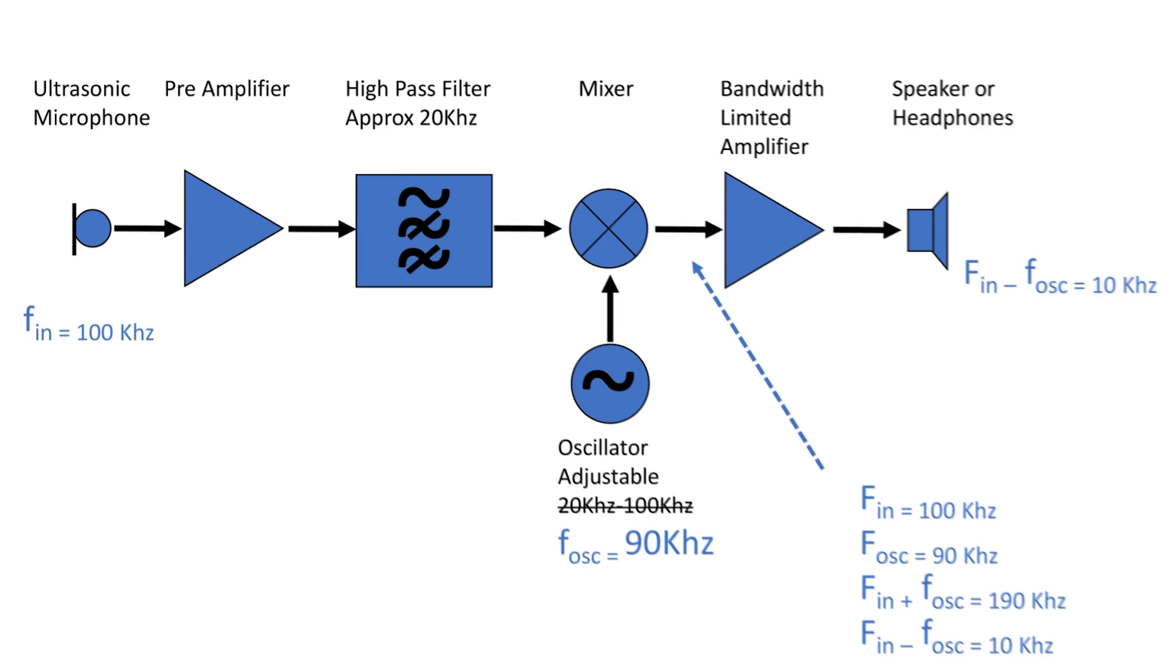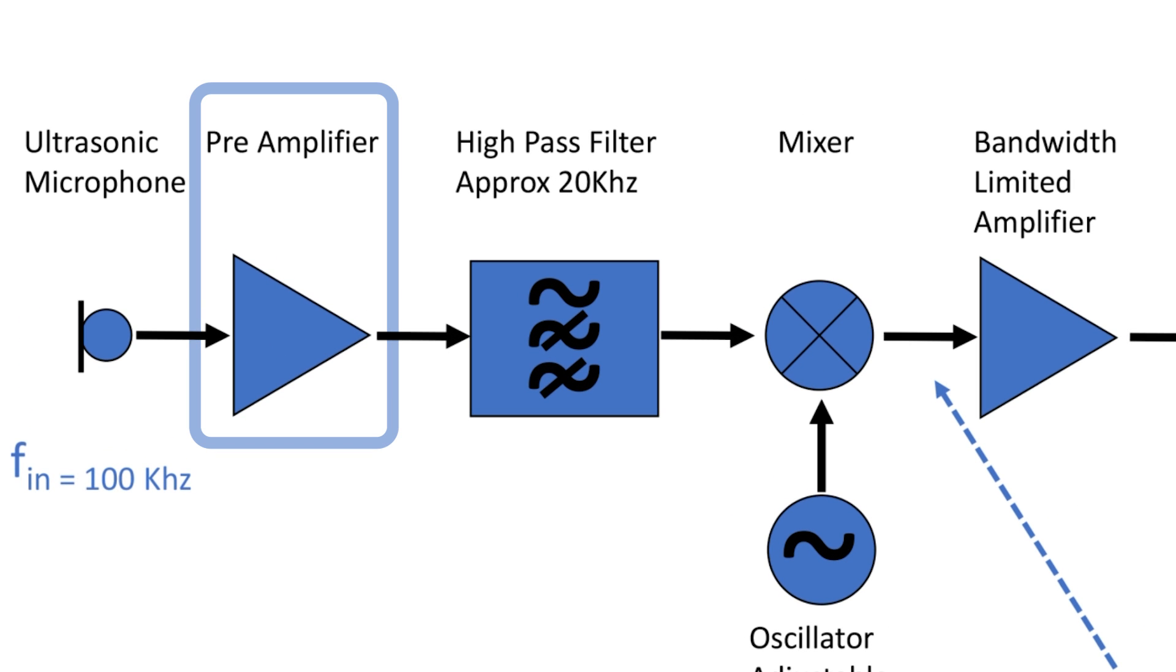Now, first what we do is after we amplify the input signal, we are going to send it to a high pass filter of approximately 20 kilohertz, which filters out all the audio frequencies.